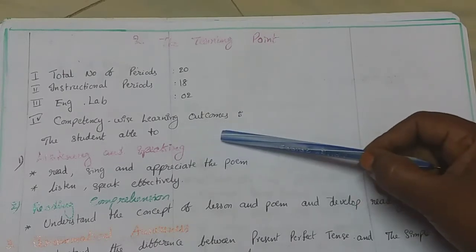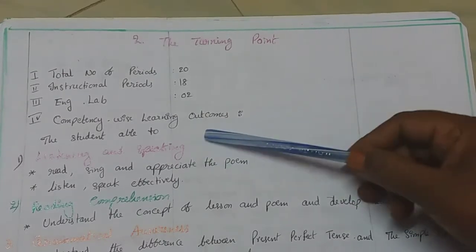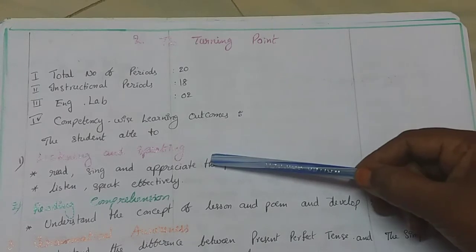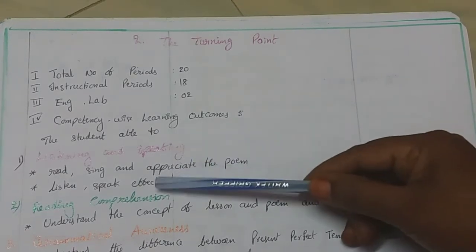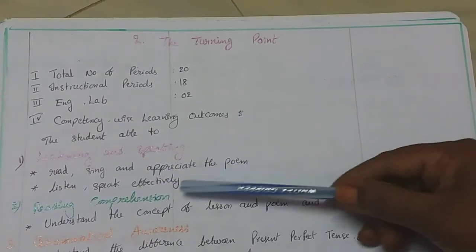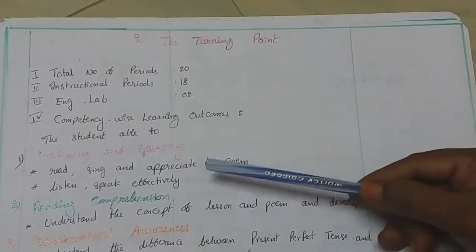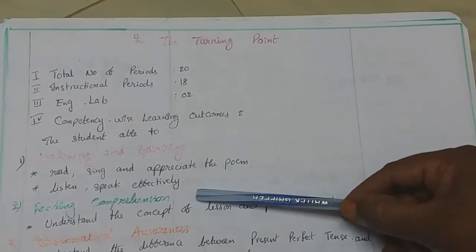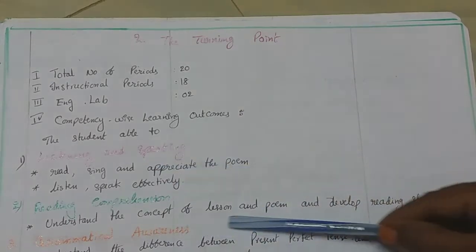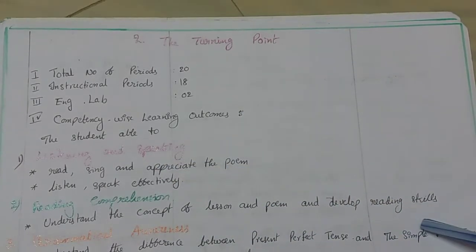These are the competency-wise learning outcomes or learning objectives. In listening and speaking, the student is able to read, sing and appreciate the poem, and listen and speak effectively. In reading comprehension, the student is able to understand the concept of the lesson and poem, and develop reading skills.